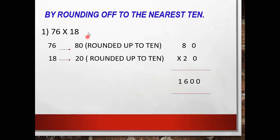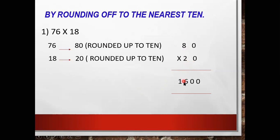Next, let's look at the exercise by rounding off to the nearest 10. Here the sum is 76 × 18. When you round 76 to the nearest 10 you get 80, and when you round 18 to the nearest 10 you get 20. Now multiply 80 × 20, and you get 1,600 as the answer.